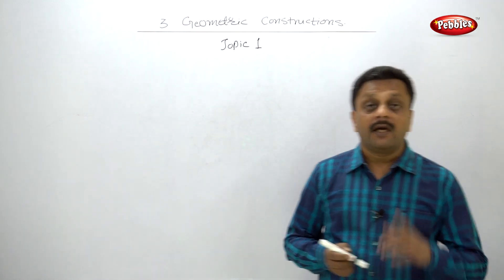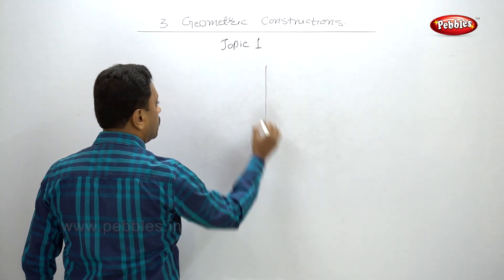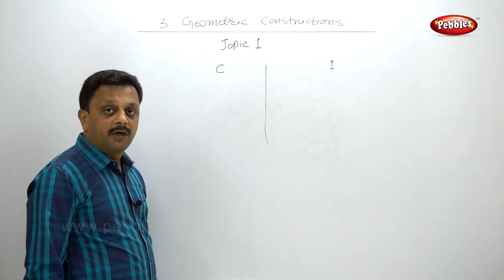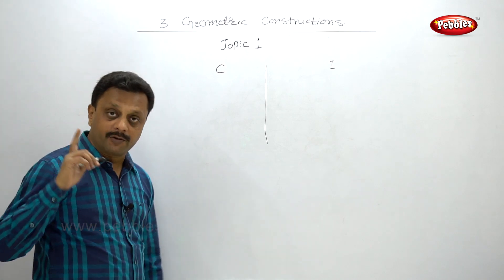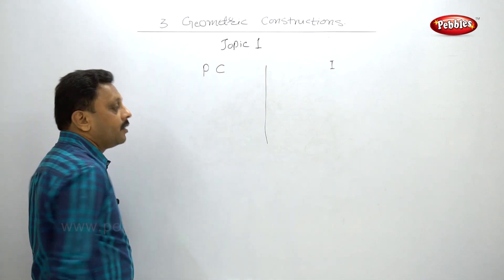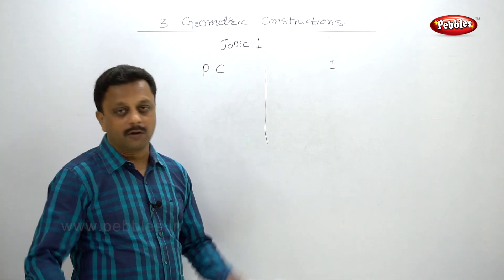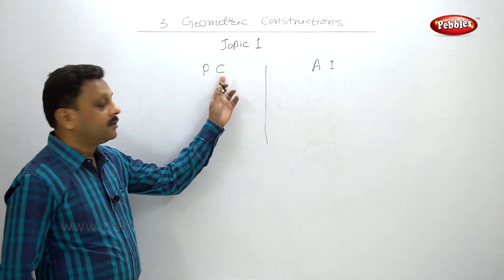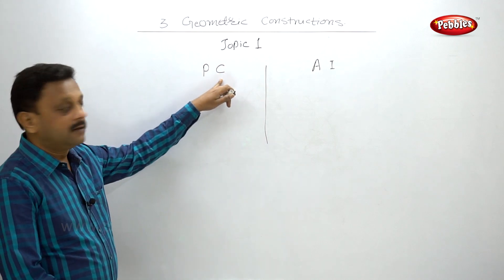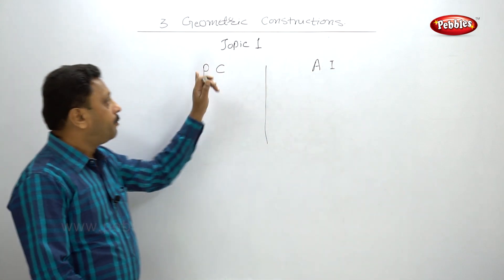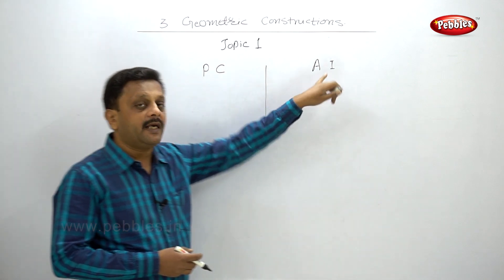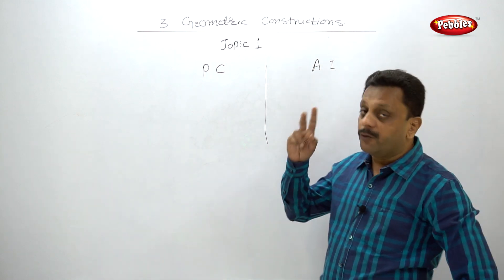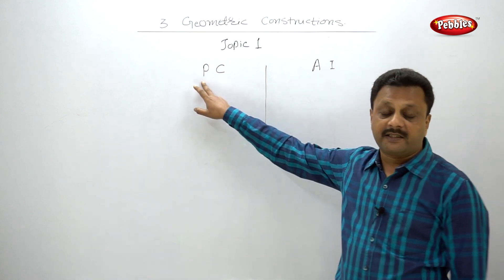To remember circum circle and in circle, I use two words: 'personal computer' (PC) and 'artificial intelligence' (AI). C is for circum circle, I is for in circle, P is for perpendicular bisector, and A is for angle bisector. Whenever a triangle is given, if you draw the perpendicular bisector of any two sides, the point of intersection will be the center of the circum circle.